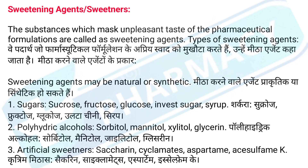Types of sweetening agents: 1. Sugars: sucrose, fructose, glucose, invert sugar, syrup. Sharkara: sucrose, fructose, glucose, ultachini, syrup. 2. Polyhydric alcohols: sorbitol, mannitol, xylitol, glycerin. Polyhydric alcohol: sorbitol, mannitol, xylitol, glycerin.